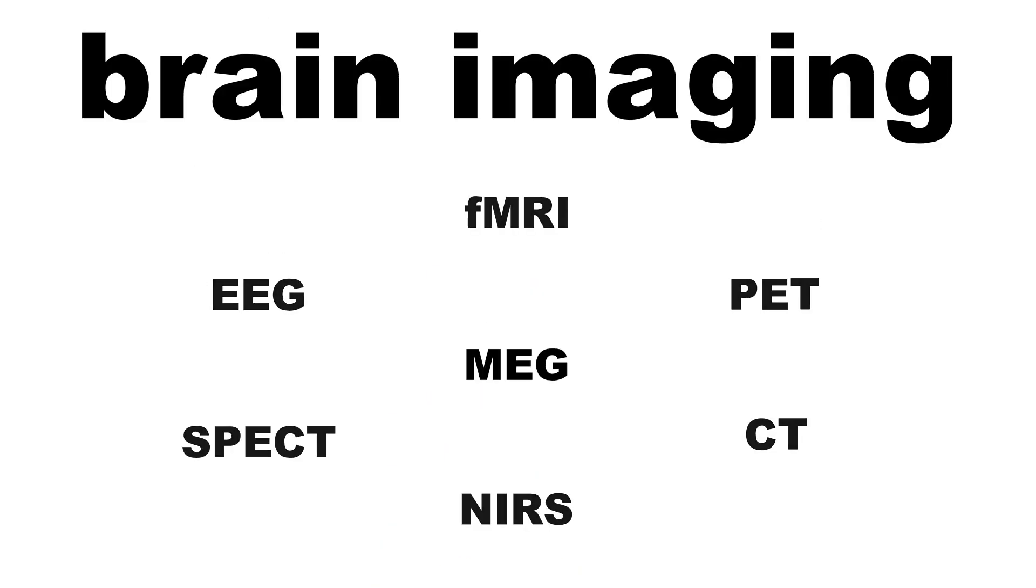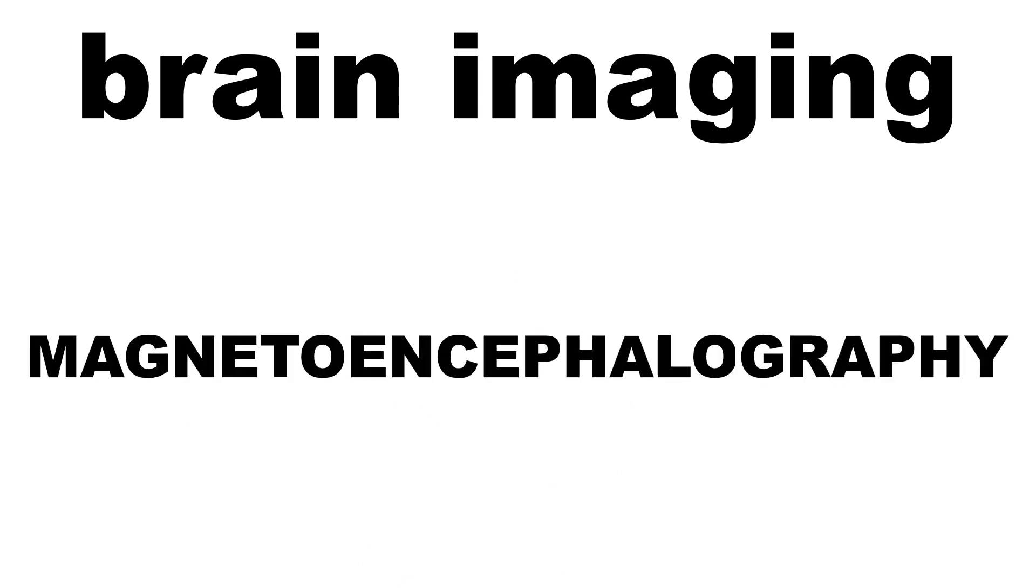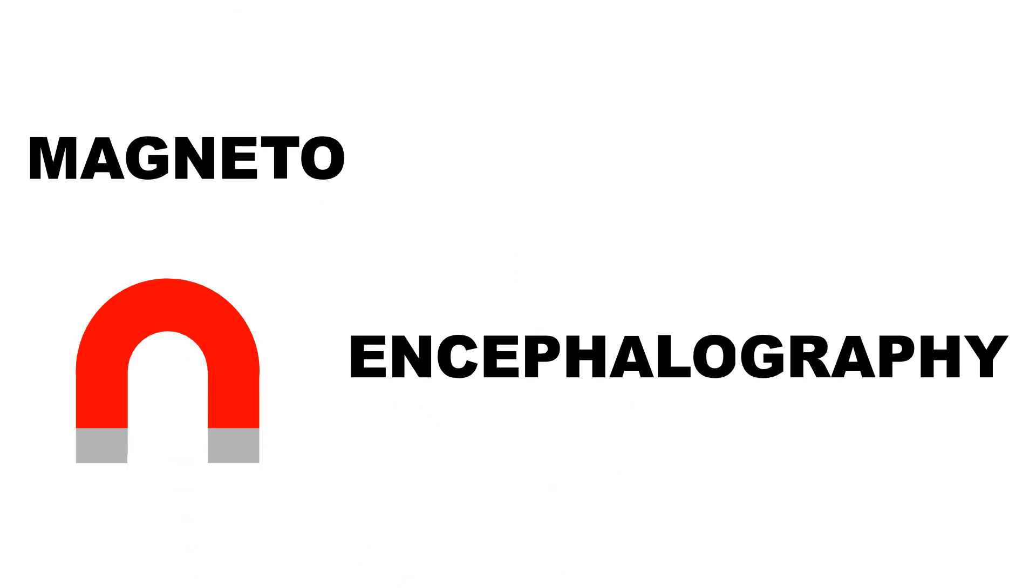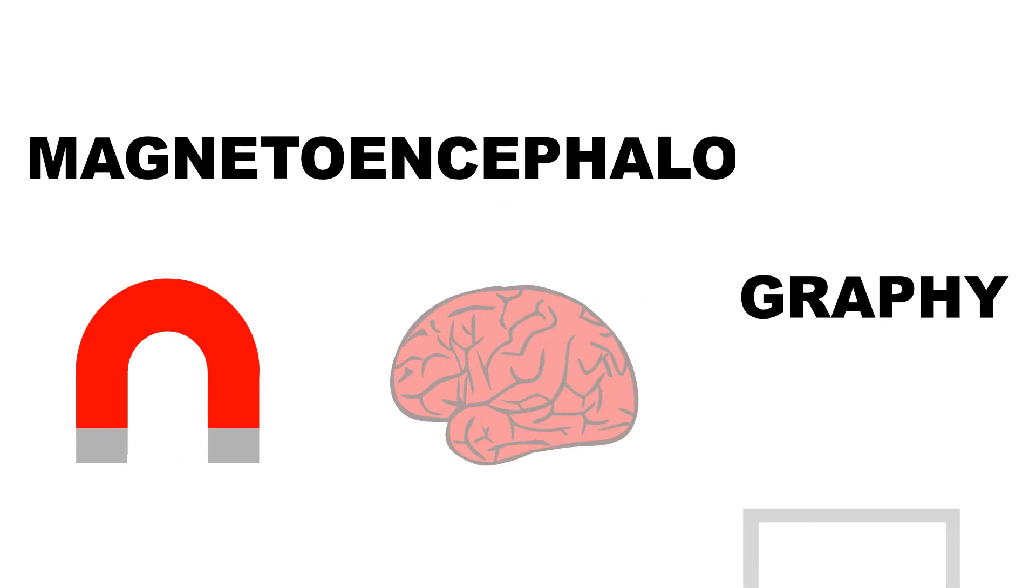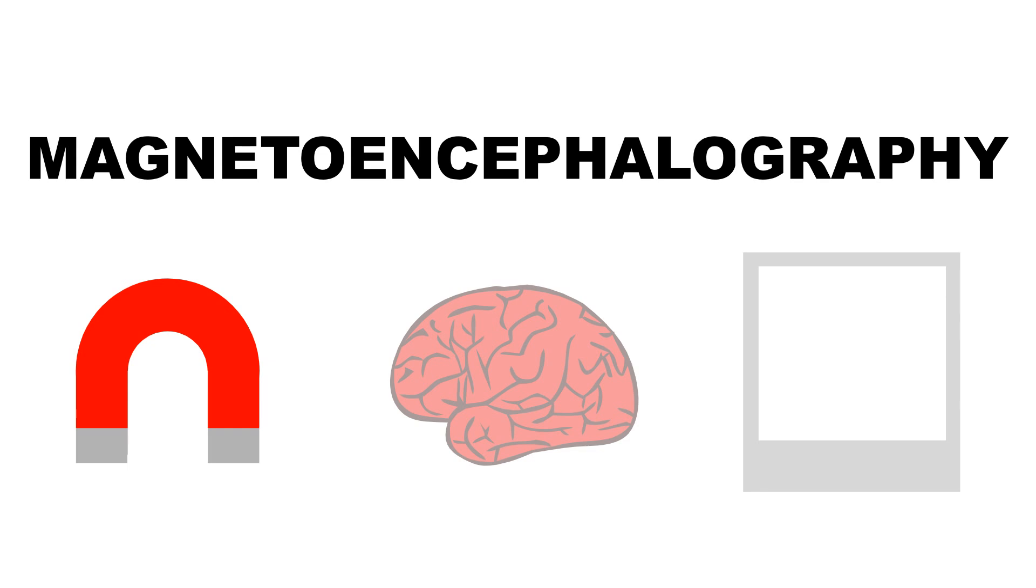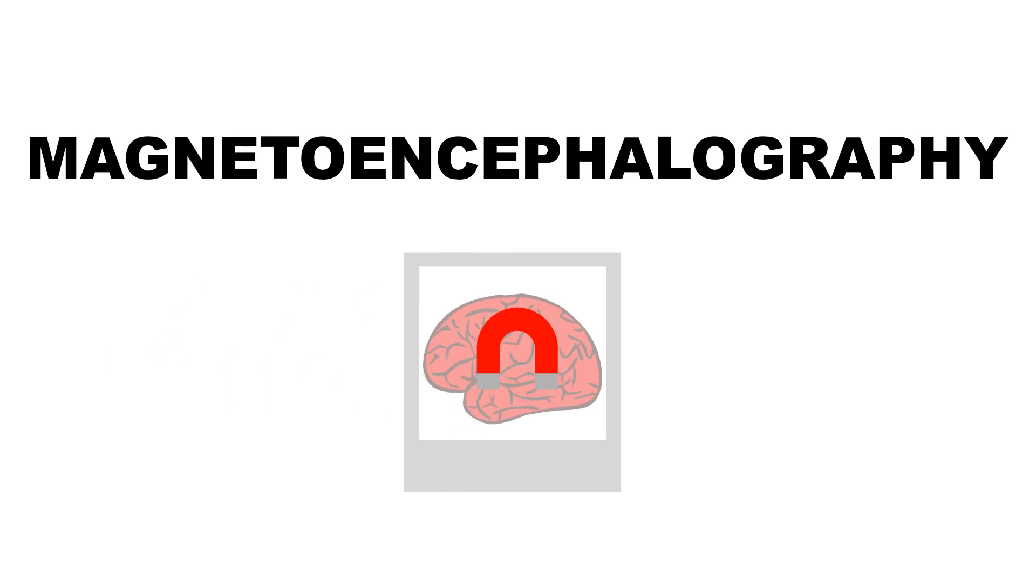One of the popular techniques is MEG, magnetoencephalography, which is much less scary than it sounds. Magneto means magnetism, encephalo means brain, and ography means images, so magnetoencephalography means images of the magnetism of the brain.